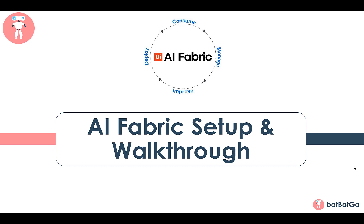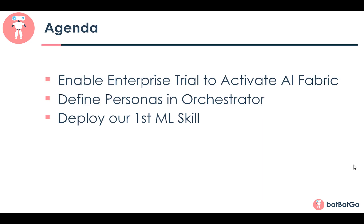Before we do that, let's have a look at the agenda. As a first step we'll enable the enterprise trial license to activate AI Fabric, then define different personas or roles in the Orchestrator, and once that's done we'll go into AI Fabric and deploy our first ML skill.